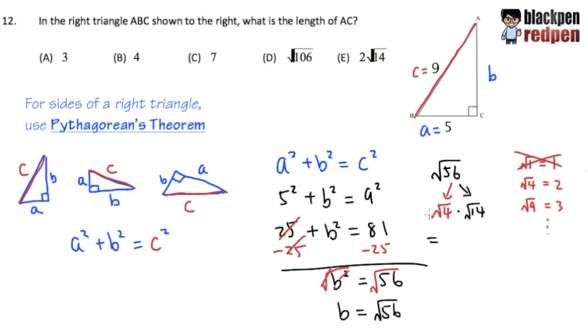And then we can continue this, because we know square root of 4 is 2, and square root of 14, this is going to be just square root of 14. Because even though I can break down 14 as 2 times 7, however, 2 is not a perfect square, 7 is also not a perfect square.